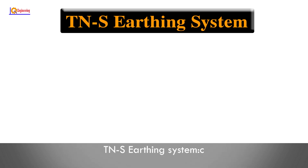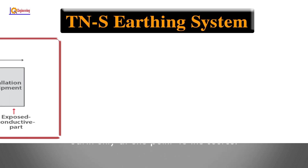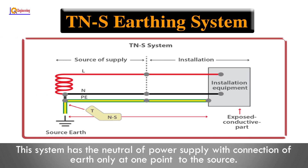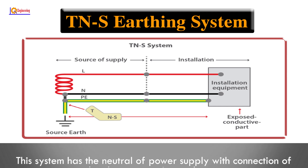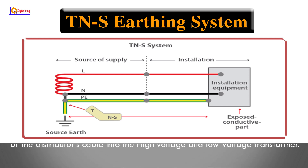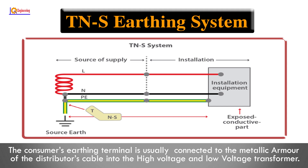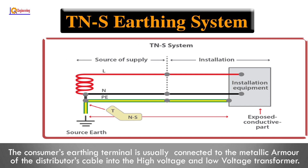TNS earthing system: This system has the neutral of the power supply connected to earth only at one point at the source. The consumer's earthing terminal is usually connected to the metallic armor of the distributor's cable into the high-voltage and low-voltage transformer.